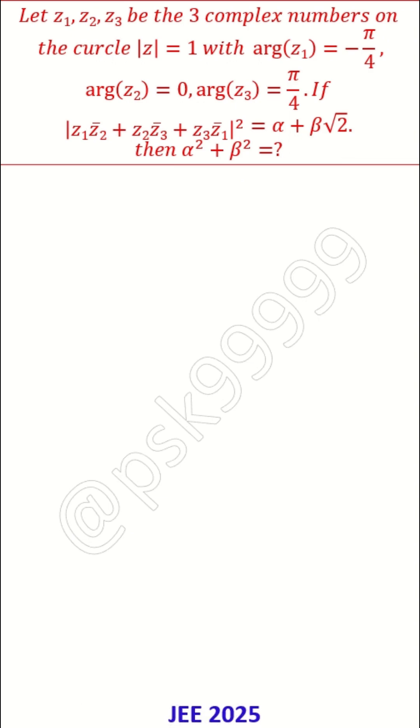So multiple things. First thing is we need to find out what is z1, z2, z3 and then their bars - z1 bar, z2 bar and z3 bar because these 3 also used, and then do the calculation.